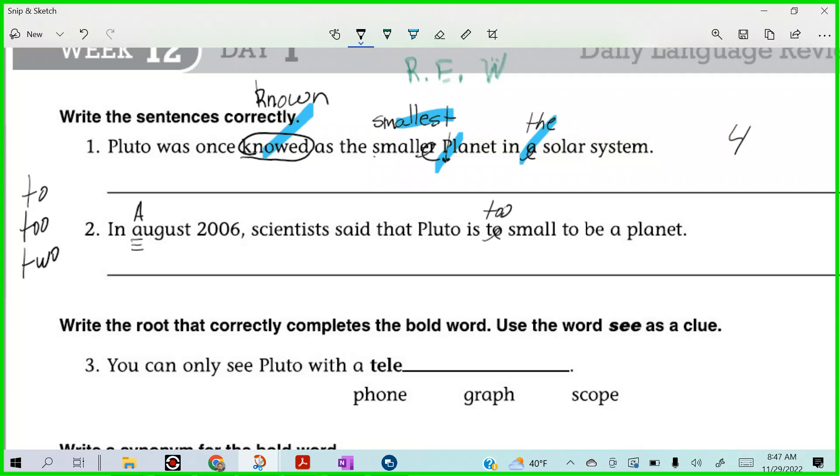You guys see anything else in this one? Because I don't. So we have two corrections in that bad boy. Let me know if you see something, because I don't see anything else. What do you see? Can you count it a lot, or you can add a comma in August? No, no. Good thinking, but no. In August 2006, comma, scientists said that Pluto is too small to be a planet. Alright. So two corrections there.